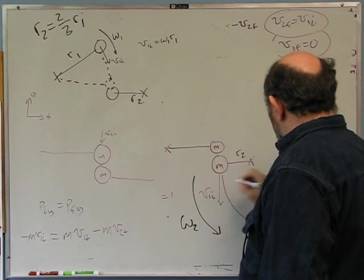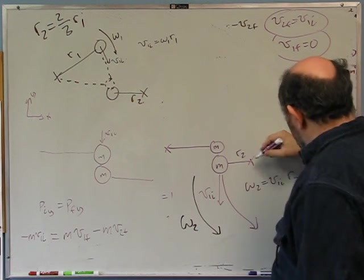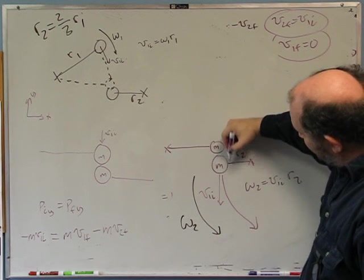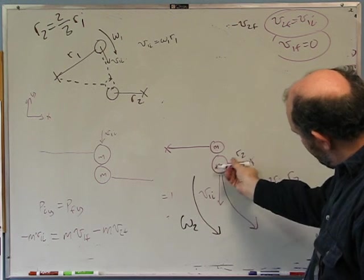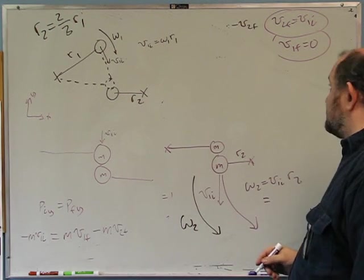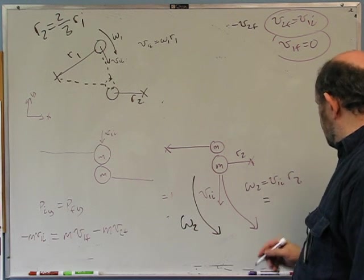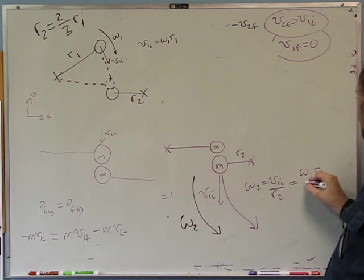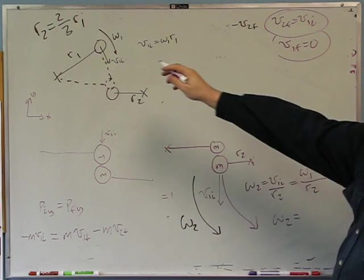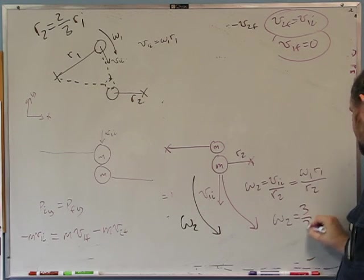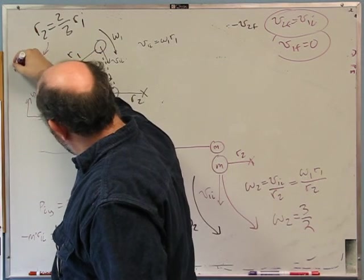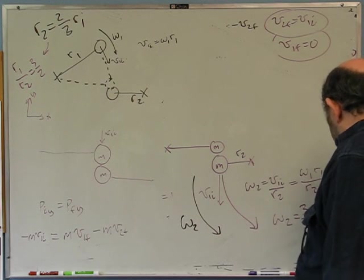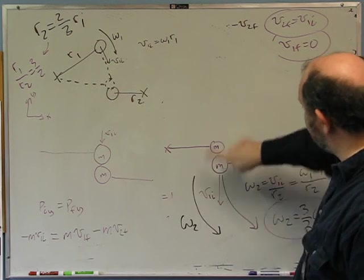Since r2 equals two-thirds r1, the ratio r1 over r2 equals three-halves. Therefore omega_2 equals three-halves times omega_1. After the collision, the first rod is not rotating, and the second rod rotates at a higher angular velocity — three-halves omega_1.